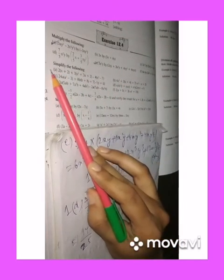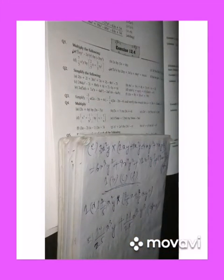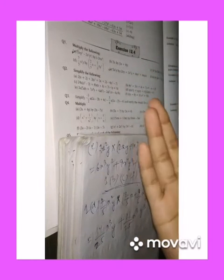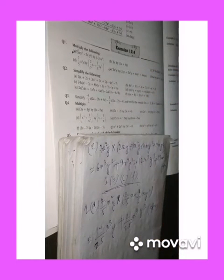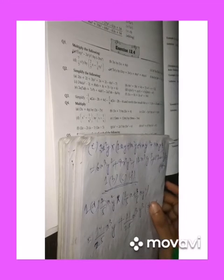Number 2: simplify the following. We simply have to open the brackets and add and subtract, just like we did in Exercise 12.2. I am doing number a for you.